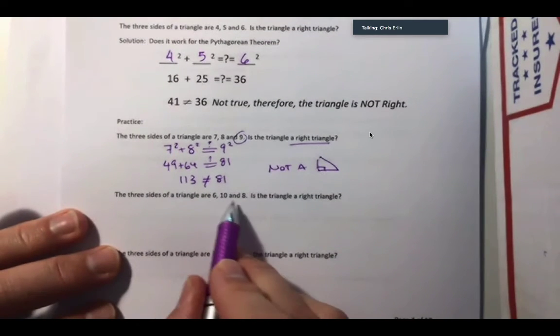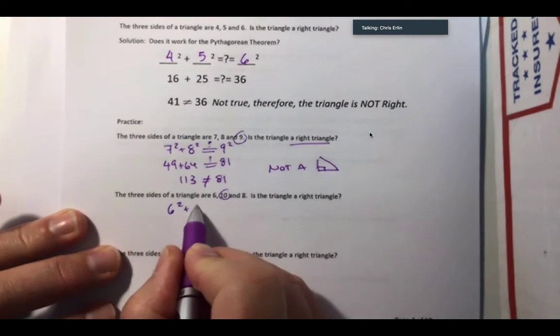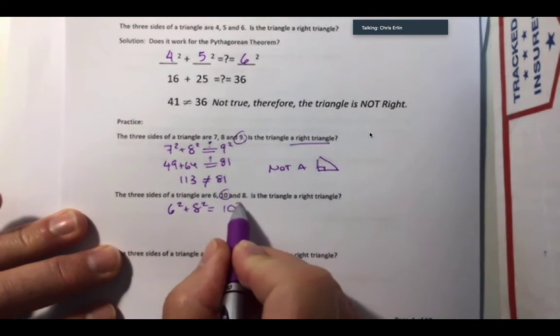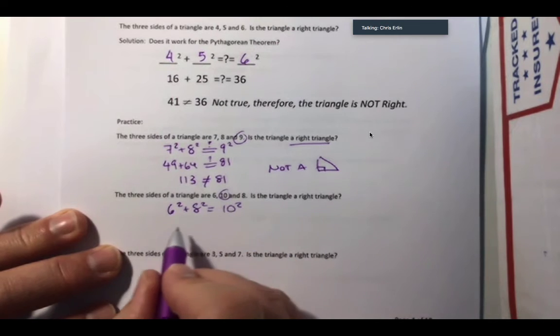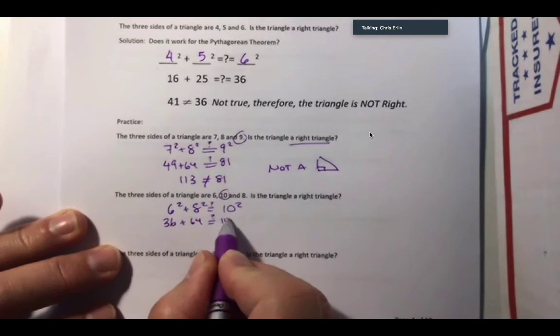I can try it with 6, 8, and 10. Wait, 10 is out of position here. So I have to remember to write 6 squared plus 8 squared equals 10 squared. The biggest one has to be over here. 36 plus 64, we don't know if this is true,